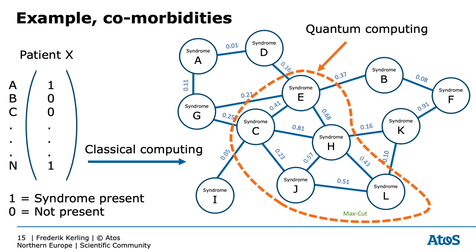So let's look at an example: comorbidities. A patient is classified with a set of morbidity syndromes. We want to know how these syndromes group so that we can develop group syndrome drugs, as now there is only a single drug per single syndrome, and once you have more than one syndrome this creates drug complications. Each patient is represented as a vector, where one means the syndrome is present and zero means it's not present. After a lot of classical computing, you get a correlation map, and we try to find the so-called max cut — the optimal cut of the most correlated syndromes.